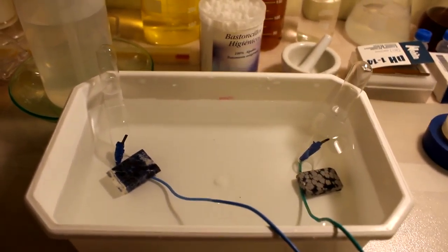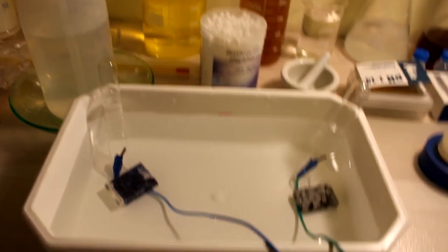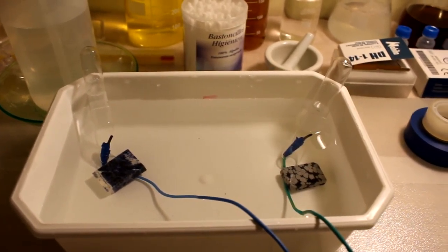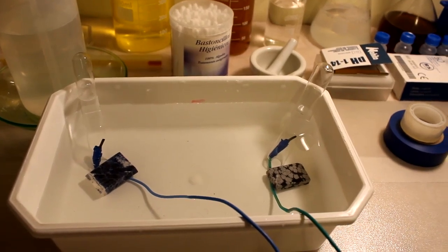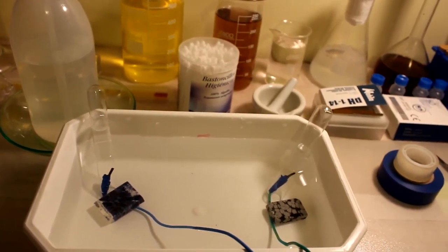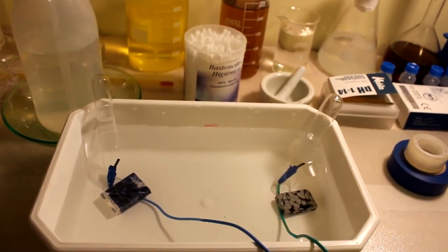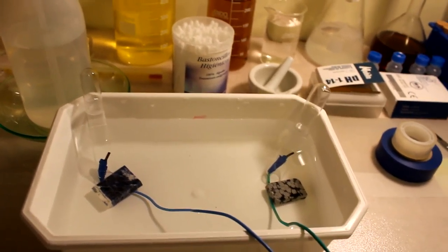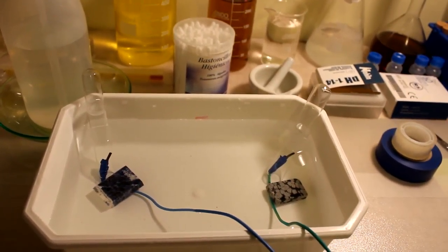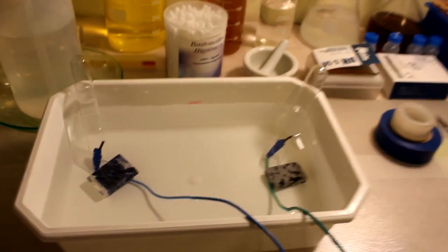A ver, otra cosa importantísima que se me ha olvidado, que si no, no funciona. Como veis, le he marcado ahí el nivel de agua en el que está ahora. Hay que echarle un poquito de vinagre, porque si no, nada, no hay tutía. Vinagre, que es ácido acético al 5%, cuya fórmula es CH3COOH. Vamos a echarle un poquito.